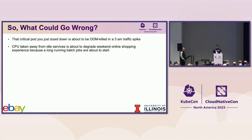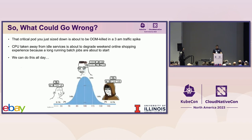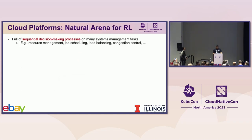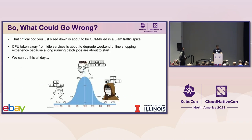Does this mean we're done? Not quite. There are many ways this could go wrong — for example, you just took away memory from a pod known to get OOM-killed during spikes, and a spike is about to occur, or that idle CPU you repurposed degrades the shopping experience later when a bad job starts. We can speculate about different failure scenarios, but the real question is: can we come up with smarter heuristics? Sure, but only with infinite time. Making recommendations based on a large set of parameters in a reasonable amount of time is a task best suited for AI.